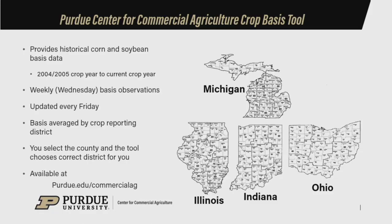A crop reporting district is typically somewhere between nine and twelve counties. In Indiana, that results in nine crop reporting districts — northeast, north central, northwest, and so forth. The data we purchased goes back to the 2004–2005 crop year, so we're looking at about fifteen years worth of historical data. You don't necessarily need all of that for forecasting, but there's quite a bit there if you want to go back and look at a particular year — for example, if we're facing a drought year, we may want to look at what basis did in 2012. We use weekly data, specifically Wednesday's data, based on research showing that Wednesday's data versus weekly averages is not really all that different.